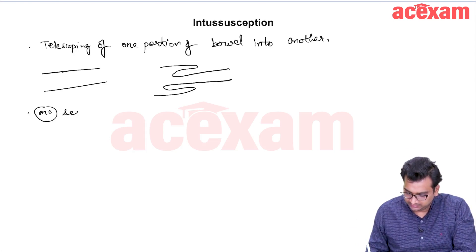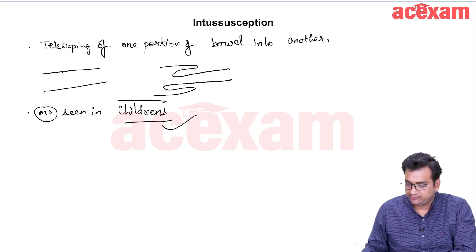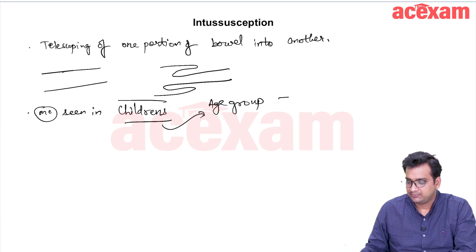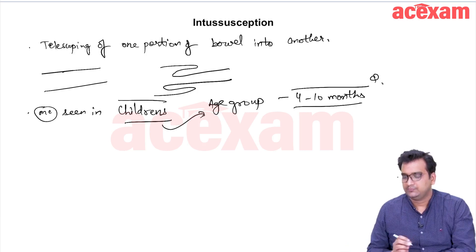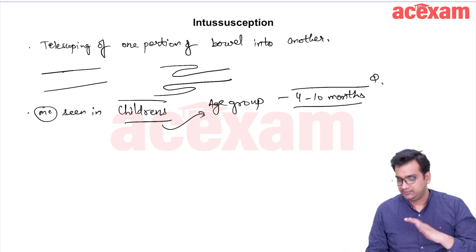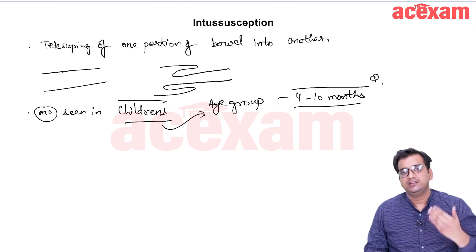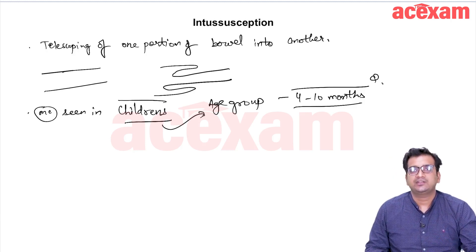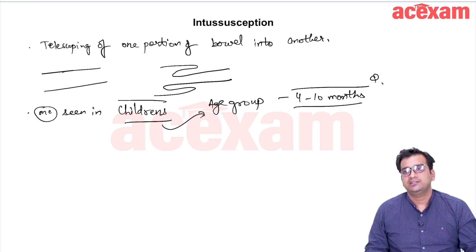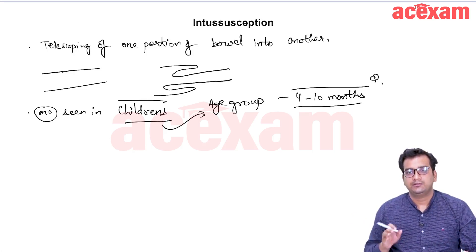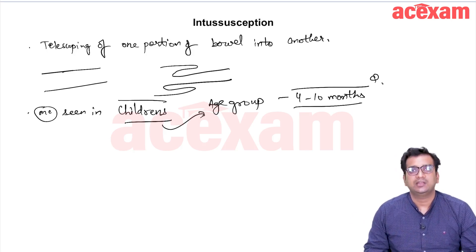Intussusception is most commonly seen in children, in the age group of 4 to 10 months. The hypothesis is that at the time of weaning, there is an increased risk of infection. This infection leads to Peyer's patches hypertrophy, and the terminal ileum generally goes inside the colon or cecum, leading to ileocolic type of intussusception.